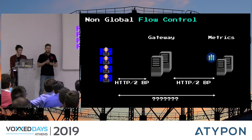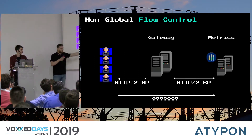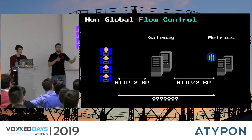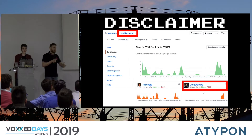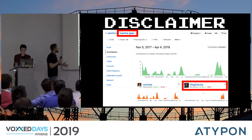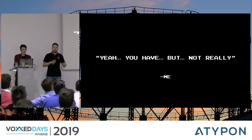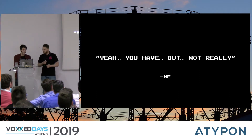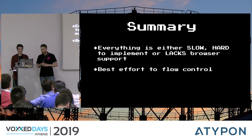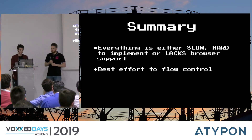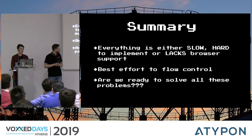In a few words to summarize: gRPC has backpressure, but it's kind of fake backpressure — we can only control it between a few parts, not during the whole pipeline. That's why it could hit the stability of a system. I tried to do my best to make gRPC work as well as possible, but I failed. I tried to implement the best solution using reactive streams, but it didn't work. So to summarize everything: everything is either slow, hard to implement, or lacks browser support. And the flow control backpressure is either absent or requires a lot of work to make it work properly.